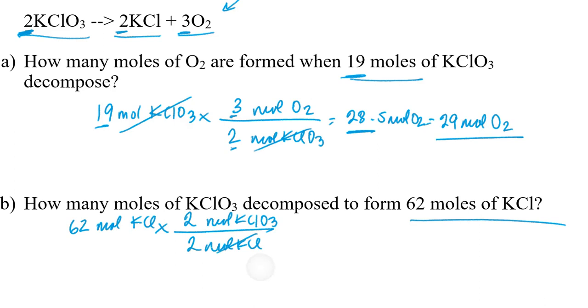And so if I cancel out my units of moles of potassium chloride. And if I multiply 62 times 2 and divide by 2, then I should get the number of moles of potassium chlorate. And that should be 62 moles of potassium chlorate. Because this 2 cancels with that 2 since it appears in both numerator and denominator of our conversion factor.